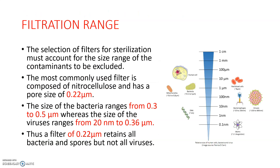The selection of filters for sterilization must account for the size range of contaminants to be excluded. The most commonly used filter is composed of nitrocellulose with a pore size of 0.22 micrometer. The size of bacteria ranges from 0.3 to 0.5 micrometer, while viruses range from 20 nanometers to 0.36 micrometer. A 0.22 micrometer filter retains all bacteria and spores, but does not retain viruses since they are smaller.